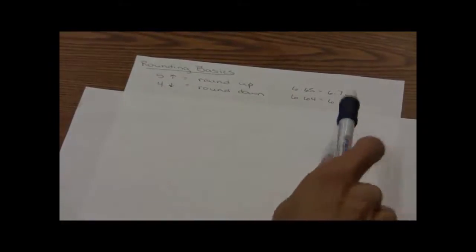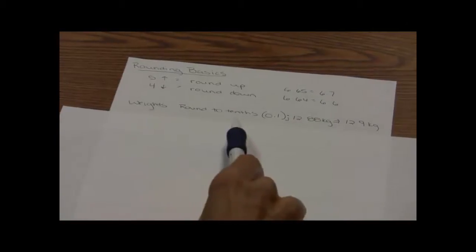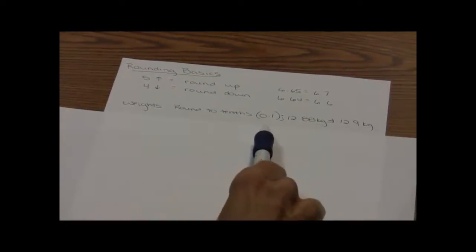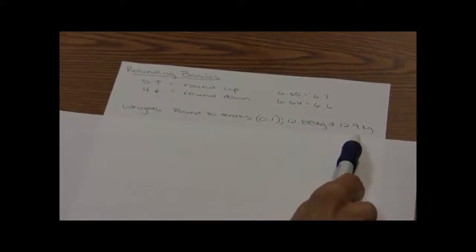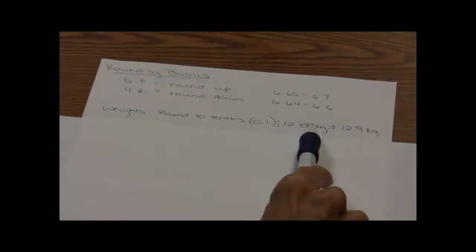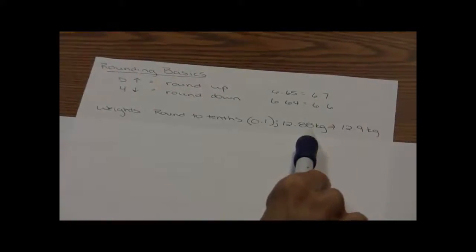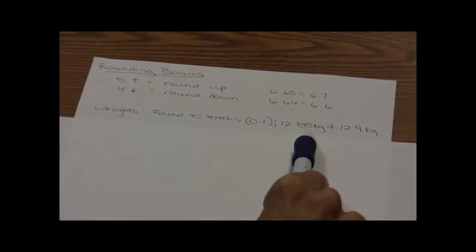So if you get a number like 6.64, we're going to keep that at 6.6. When we're rounding weights, we always round weights to the tenths position. So if I get a number such as 12.88 kilograms, that would be 12.9. I'm going to round it to the tenths — that's this 8 here — so I look at the number next to it. Since it's higher than 5, I'm going to round up to 12.9.